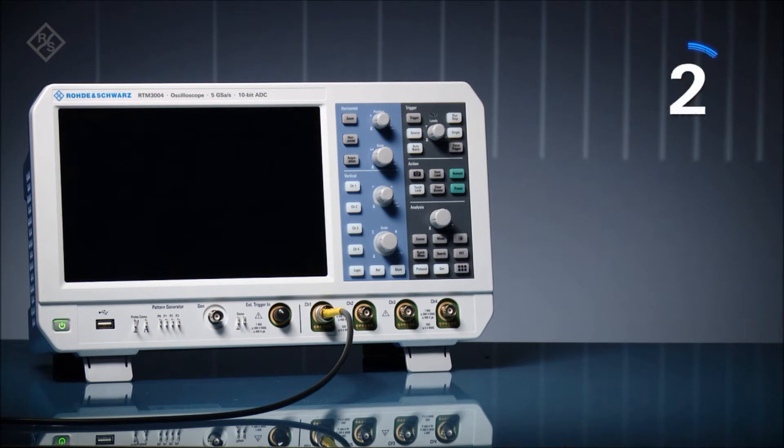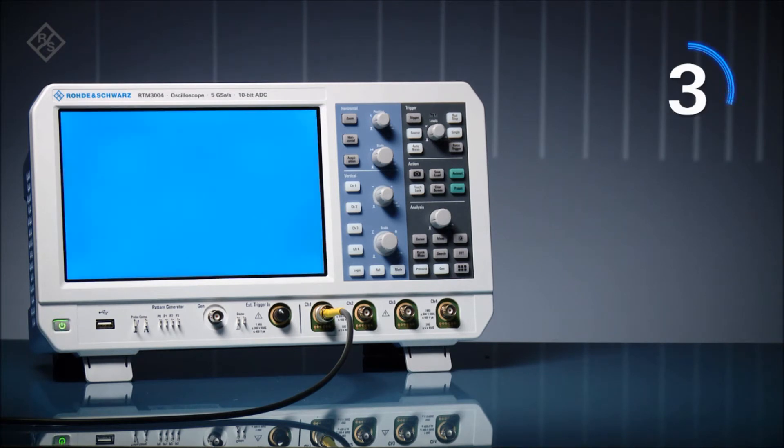Rohde & Schwarz RTM 3000 series oscilloscopes boot in about 10 seconds, faster than other scopes in their class.